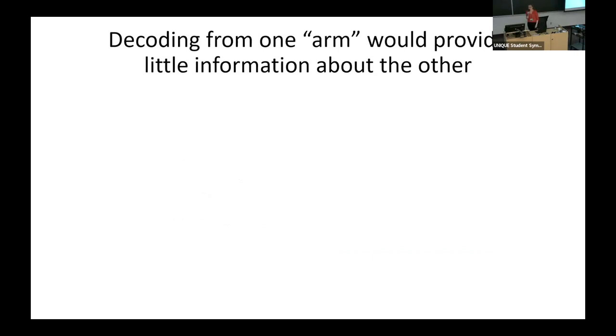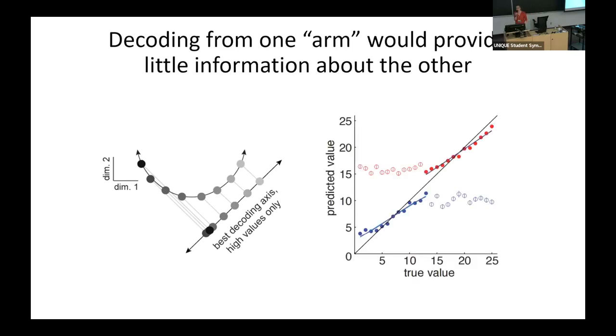The other prediction that can be made from this kind of a shape is for decoding from only a part of the manifold. When you decode from the part of the manifold, say half of it, there's little information about the other half. So if you think about our manifold, if you just split it into high values and low values and train the decoder on higher values, it should not predict well the other part of the manifold. And this is indeed what we observe. So in red, the results for training on the higher half of the manifold. And you can see there's no good prediction for the lower half and vice versa, for the training on the lower half of values.